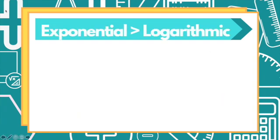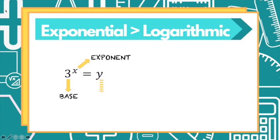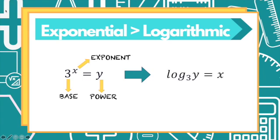A key skill for solving logarithmic equations and inequalities is to change exponential equations into logarithmic form. For example, we have 3 raised to x equals y. In an exponential equation, you have three parts: the base, the exponent, and y is called the power. When you change this into its logarithmic form, you take the logarithm of the power to the base equals the exponent — so we have: logarithm of y to the base 3 equals x.